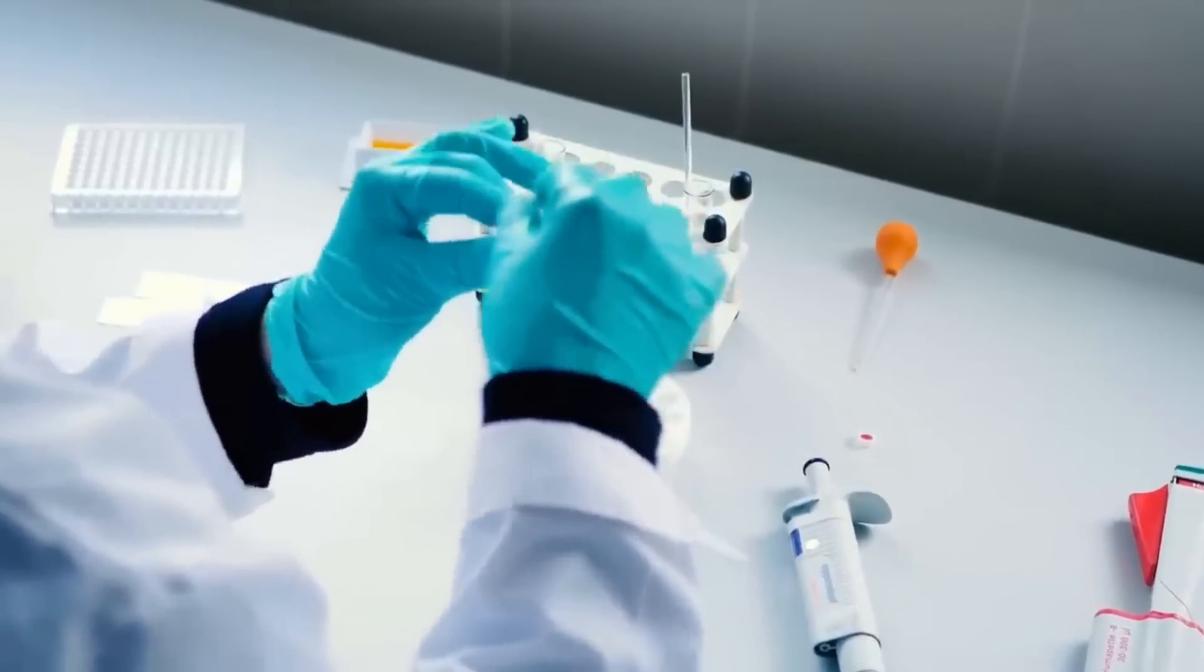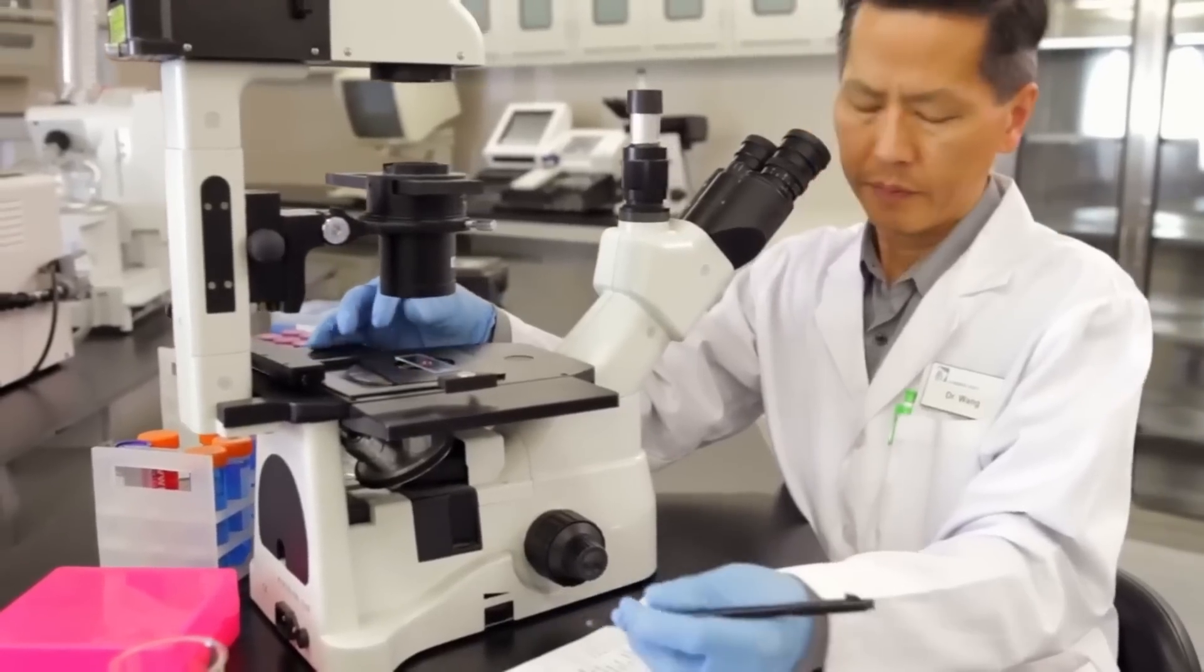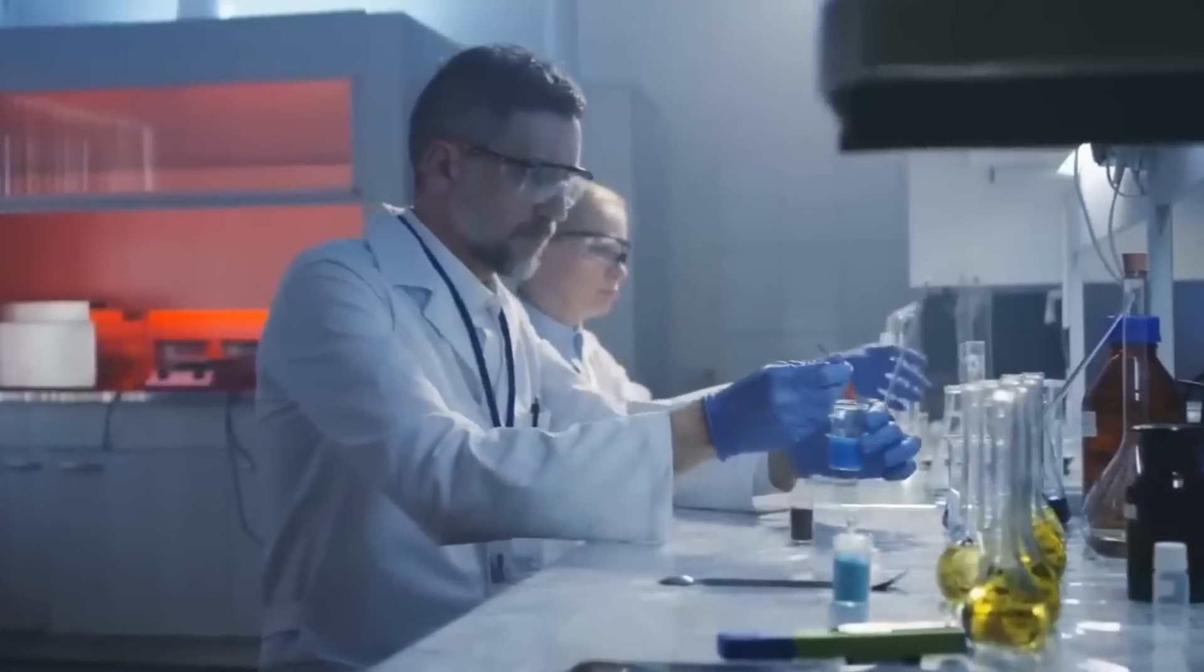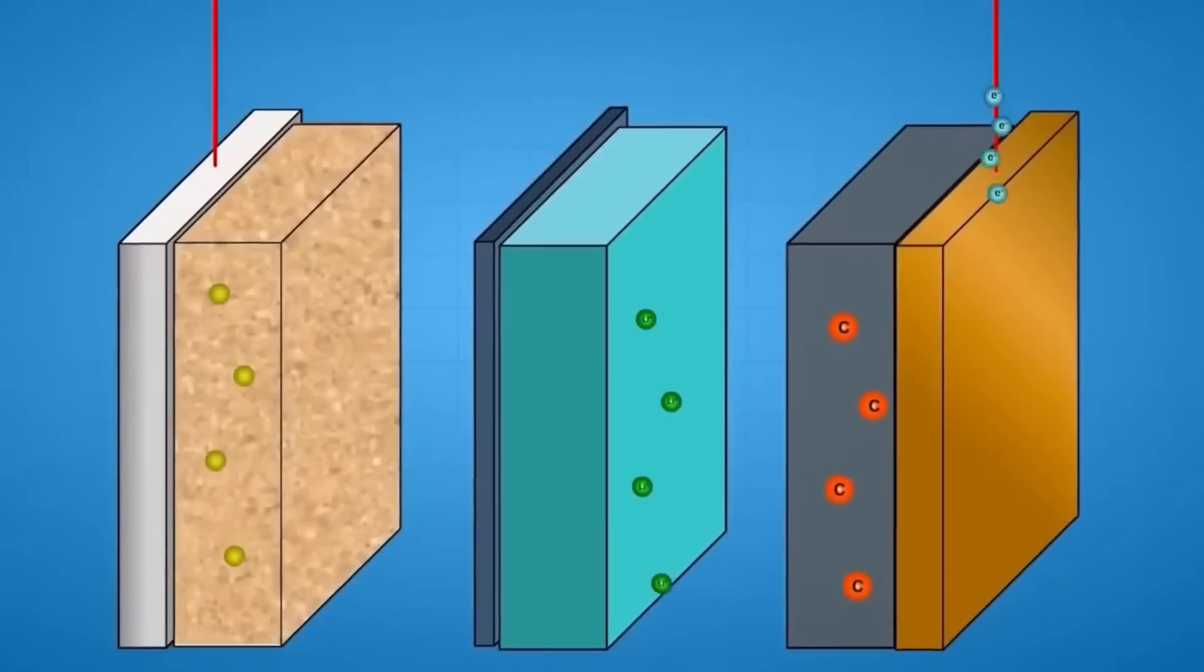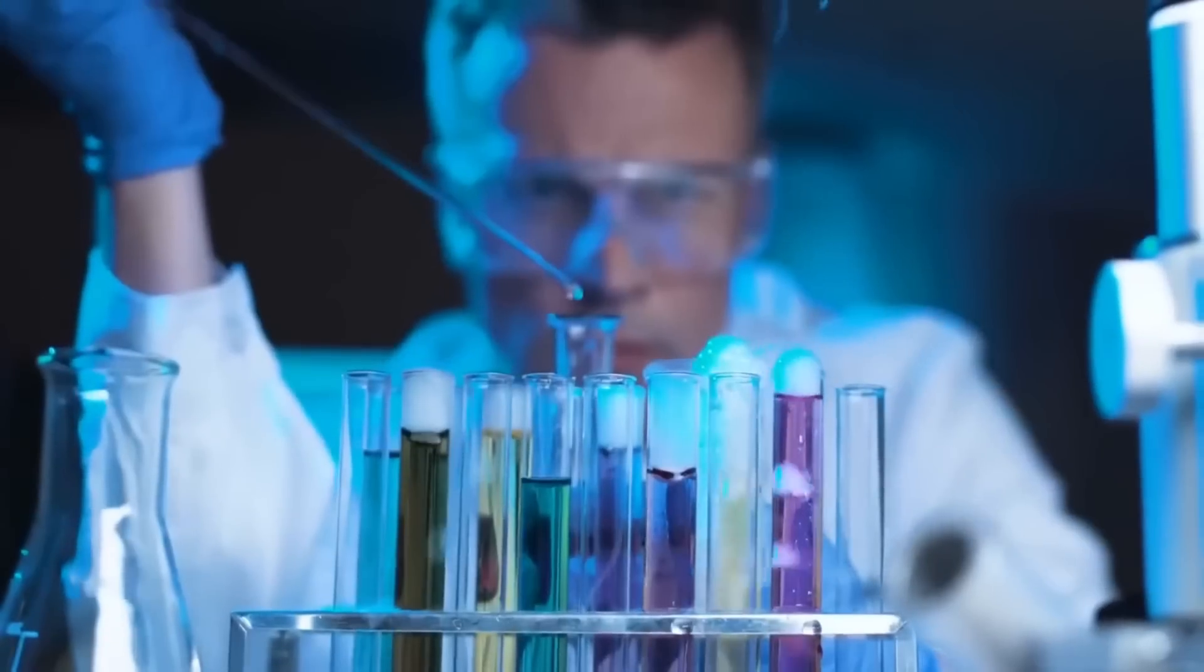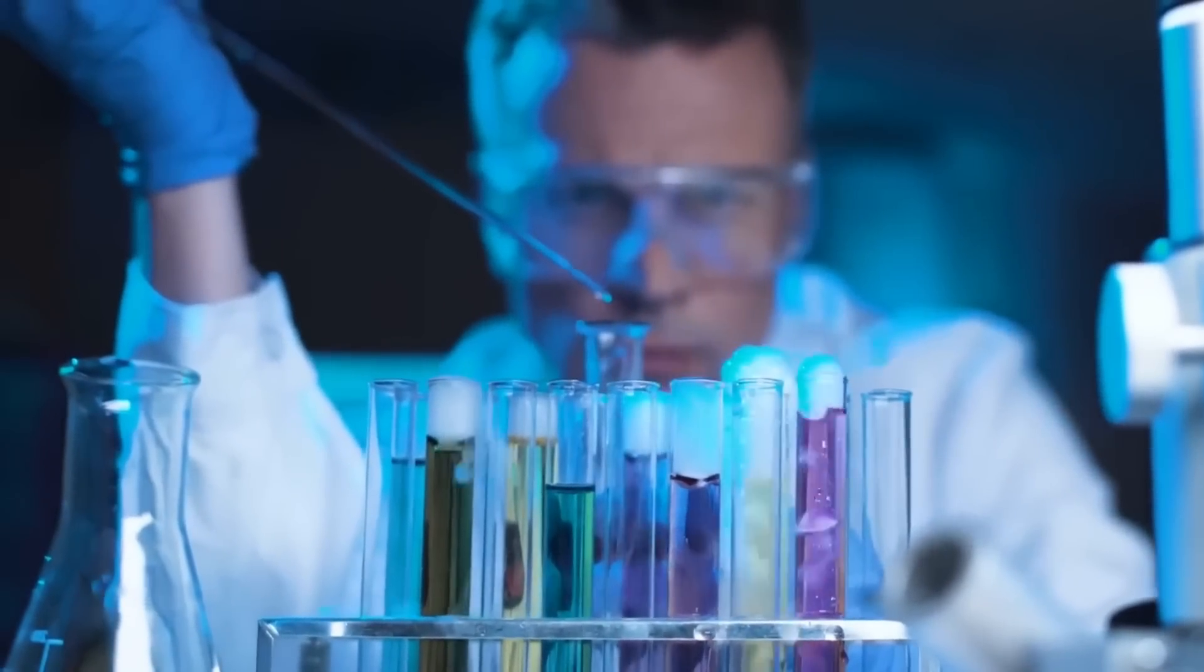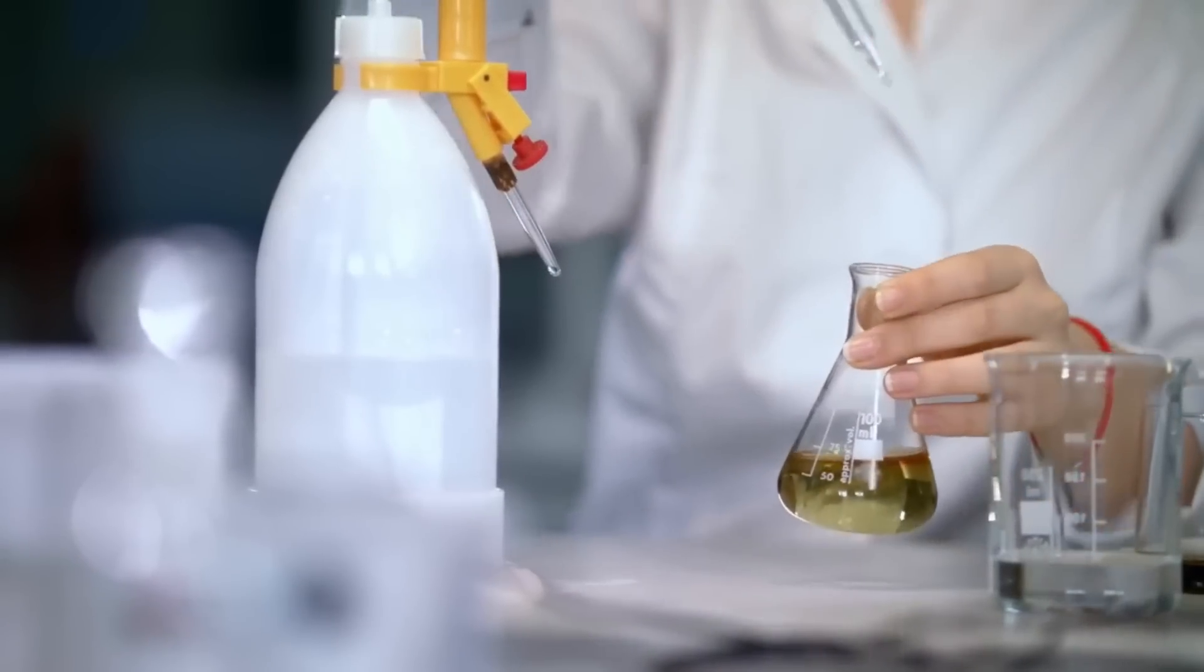However, they discovered that sulfur, an incredibly cheap material, has a significantly higher energy capacity compared to lithium-ion batteries. One of the main obstacles in harnessing the potential of lithium-sulfur batteries is the polysulfide shuttling effect. Sulfur tends to dissolve during the charging and discharging process, hindering the stability and overall performance of the battery.